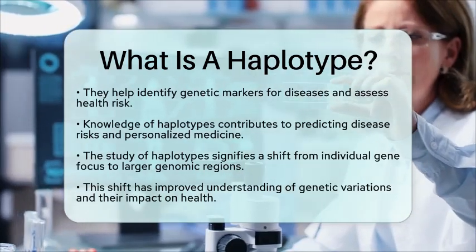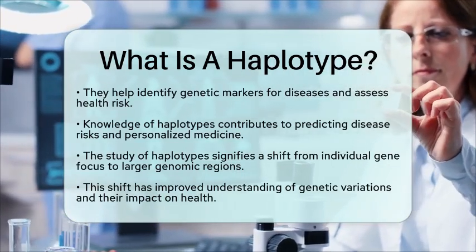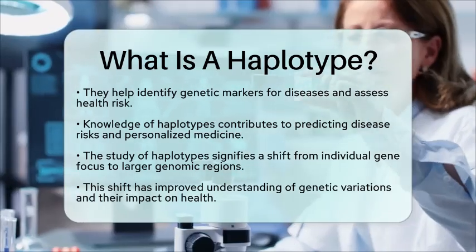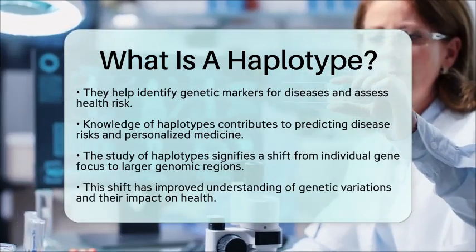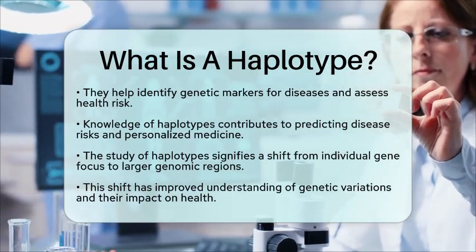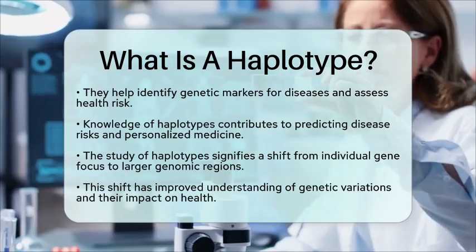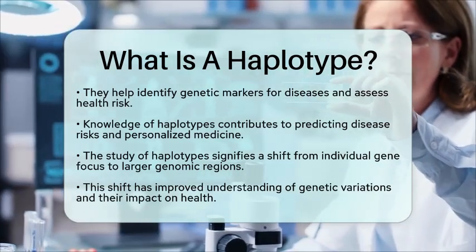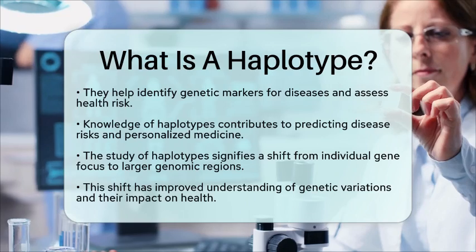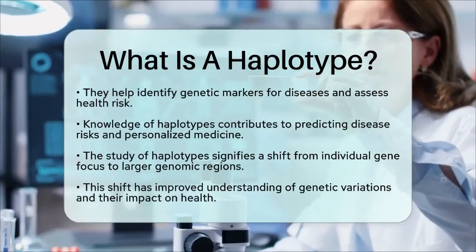This knowledge helps predict disease risks and supports the development of personalized medicine. By studying haplotypes, scientists can tailor treatments to an individual's unique genetic profile. Historically, the study of haplotypes marks a shift in genetic research — scientists moved from focusing solely on individual genes to examining larger genomic regions. This change has led to a better understanding of how genetic variations impact human health and disease.